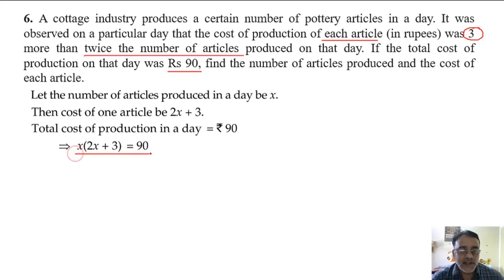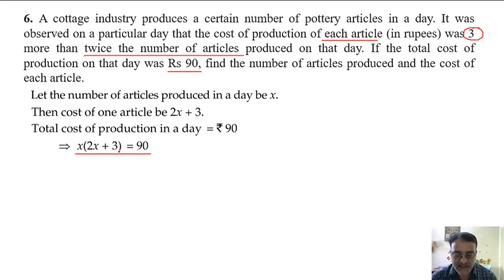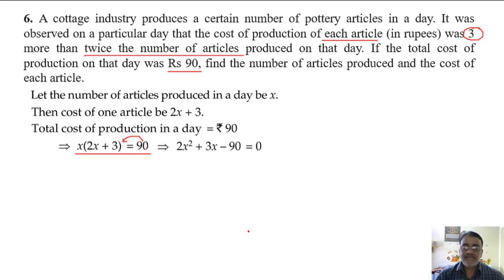Now we will form a quadratic equation from this and then solve. We expand to get 2x squared plus 3x, and shifting 90 to this side it becomes minus 90. The product of the coefficient of x squared and the constant term is minus 180.